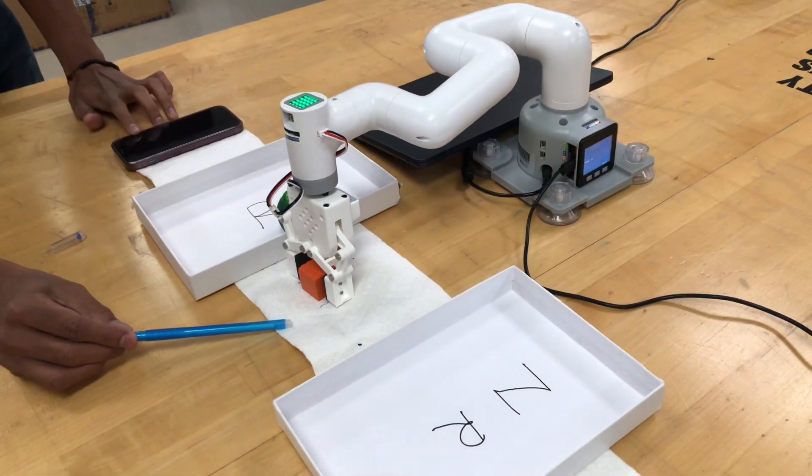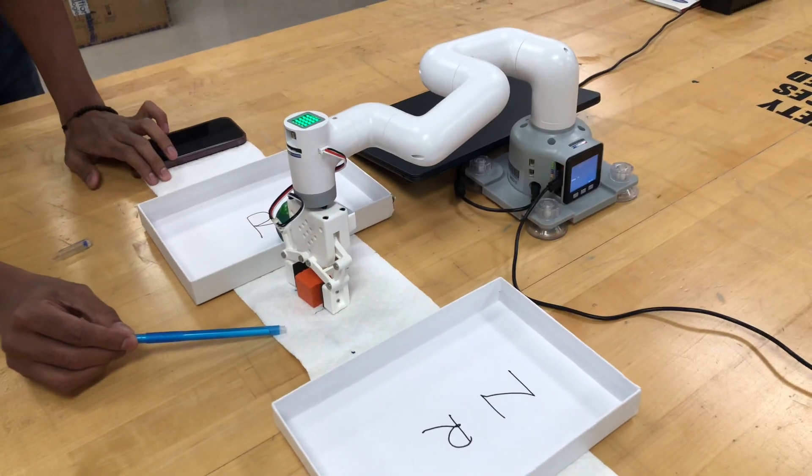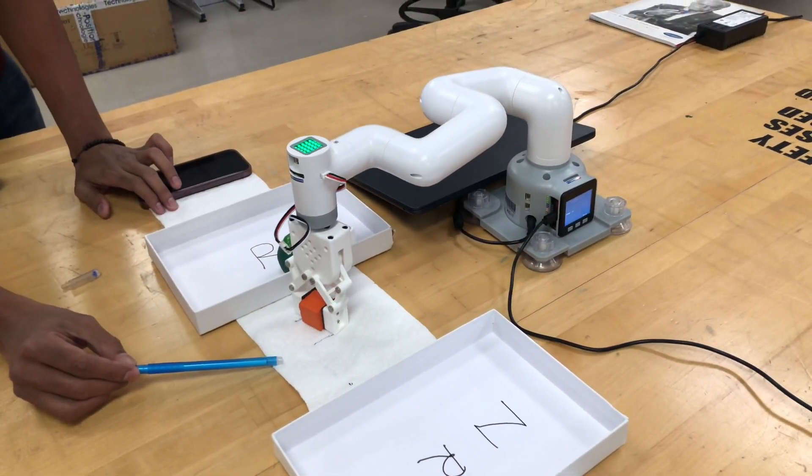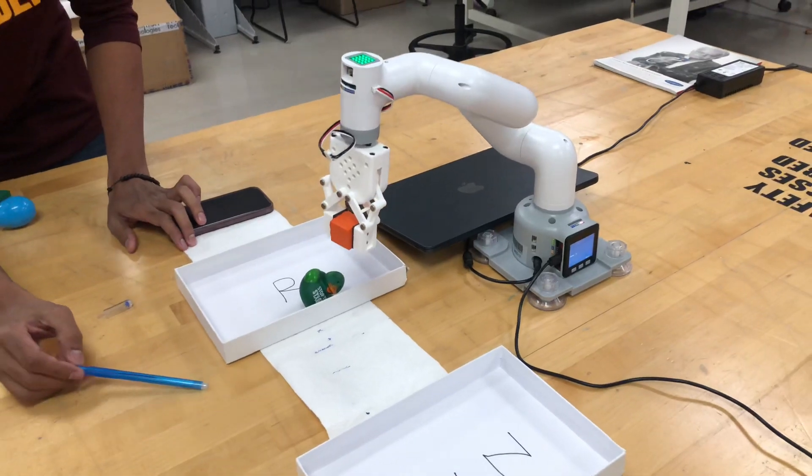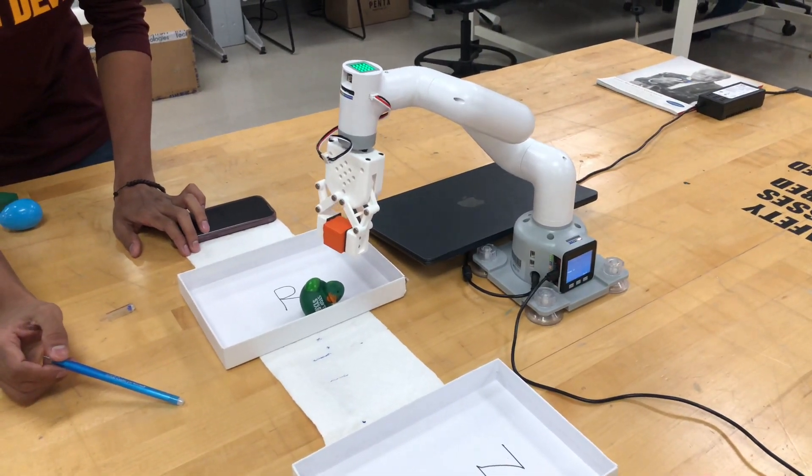And the robot arm goes in, picks it up and it will drop it into the recyclable bin.